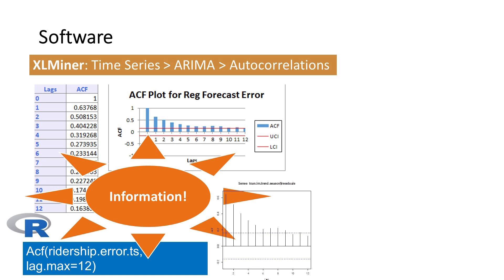In this example, it means that we might be able to improve our forecasts of Amtrak ridership even further if we capture the autocorrelation in the errors of the regression model. We'll see how to do this in the next videos.